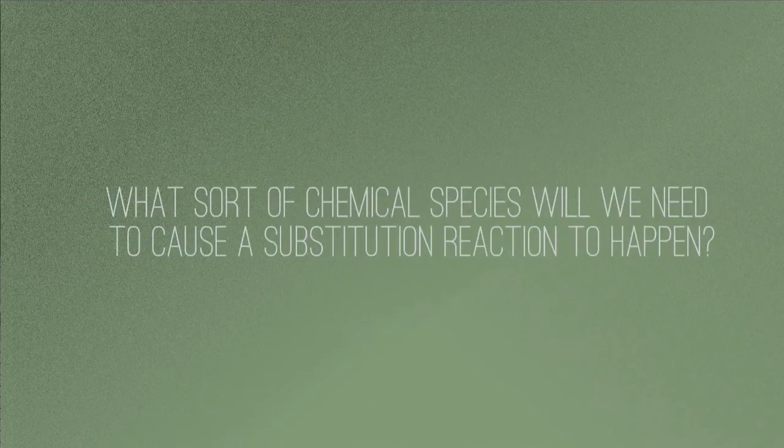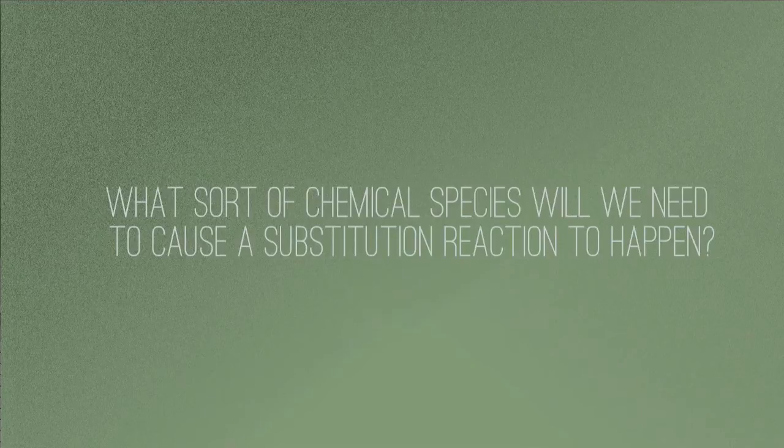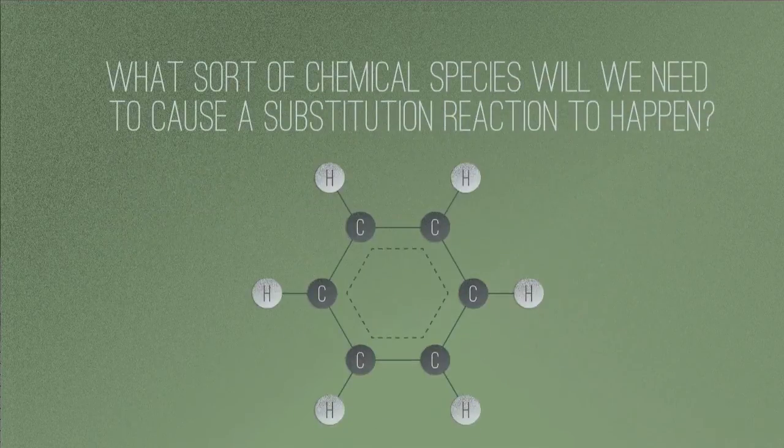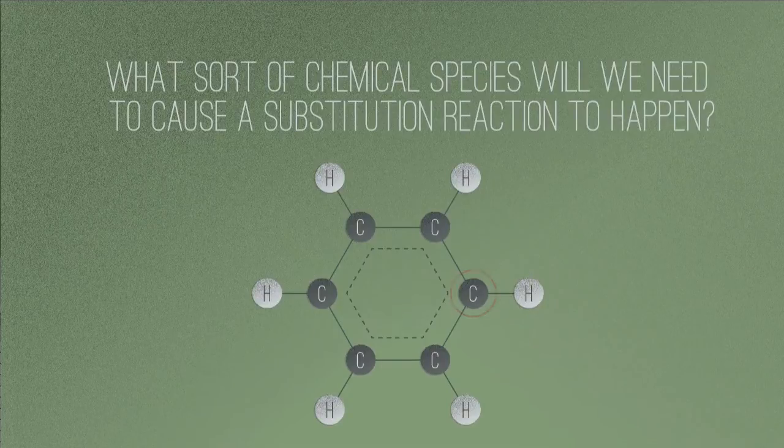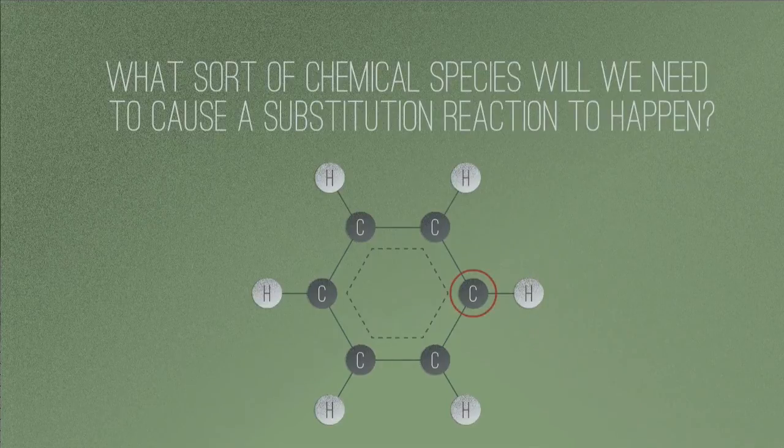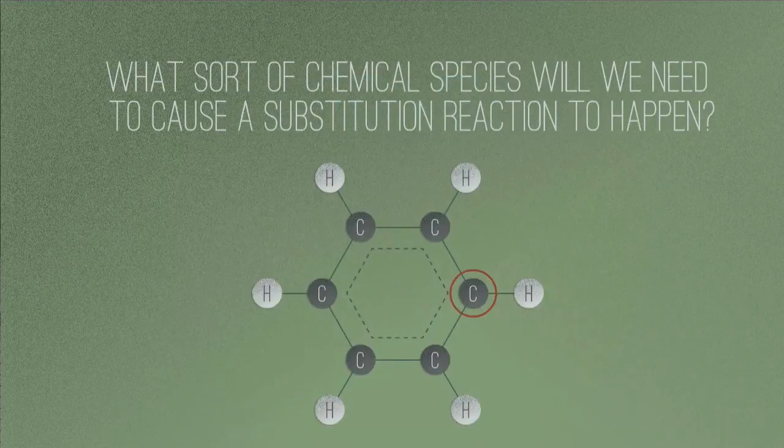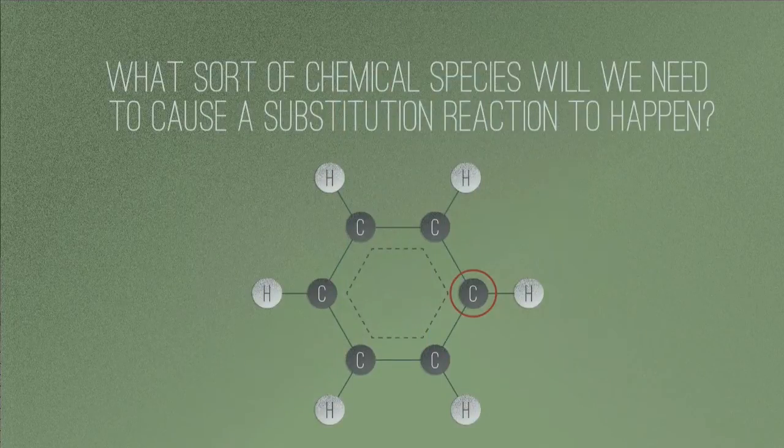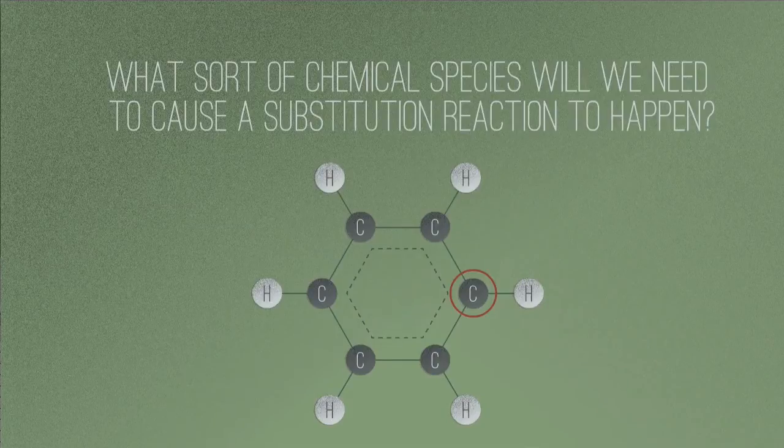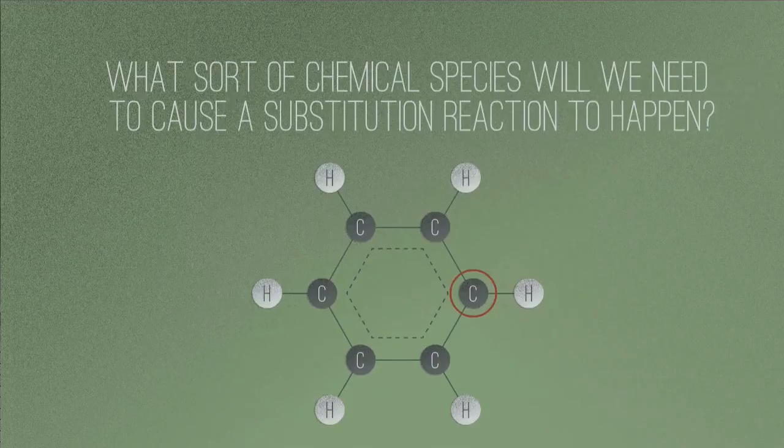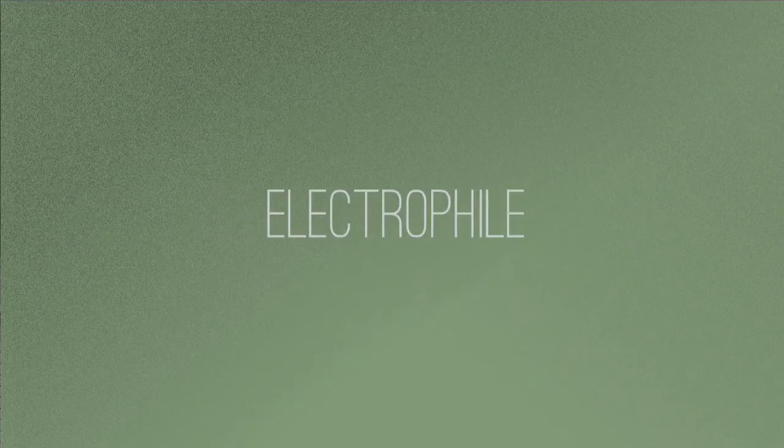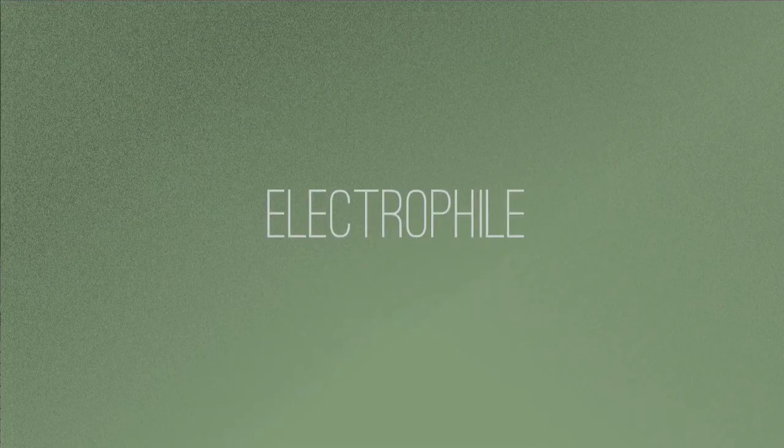What sort of chemical species will we need to cause a substitution reaction to happen? Remember, the atom in the benzene being attacked is one of the carbons and these carbons have lots of electrons moving around them. Pause the video and have a think, then resume. The answer is we will need an electrophile, something that will be attracted to all those electrons.